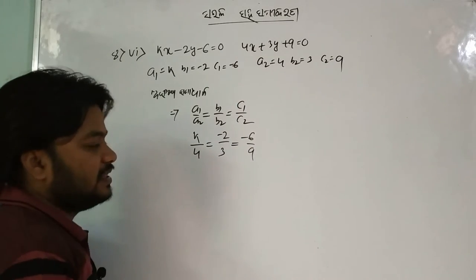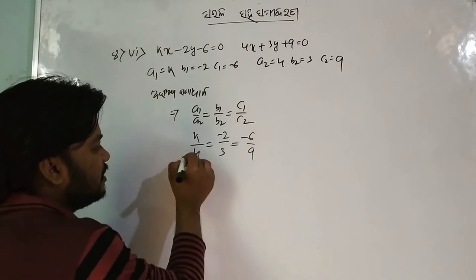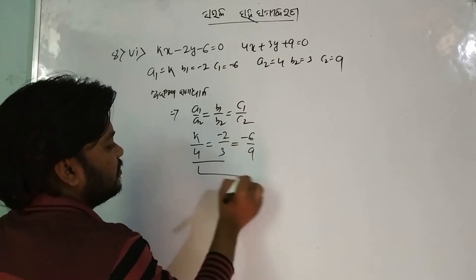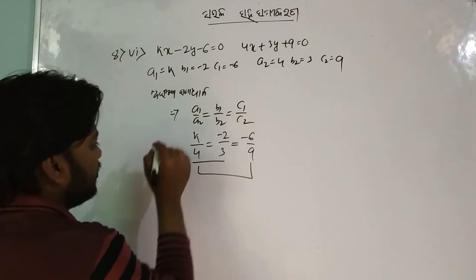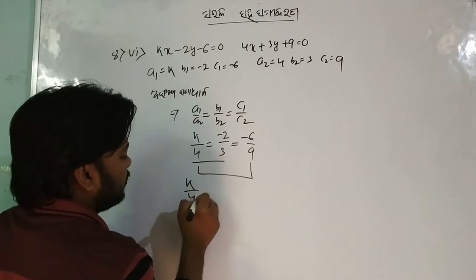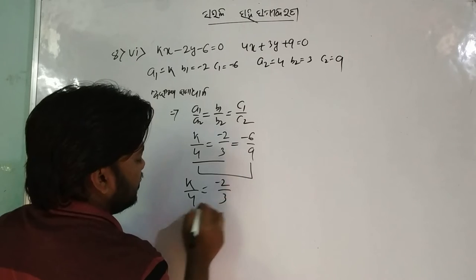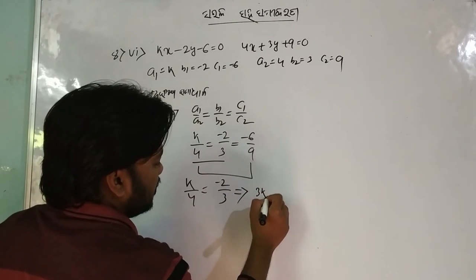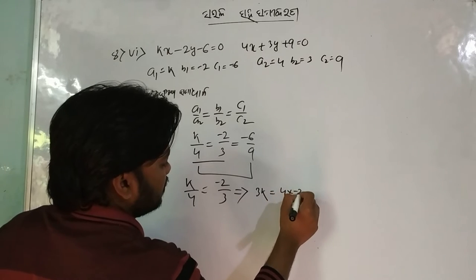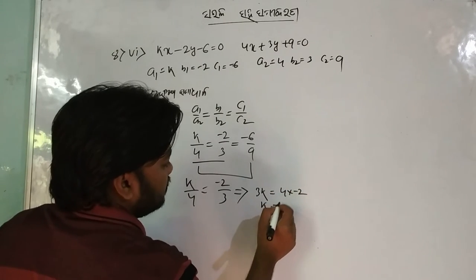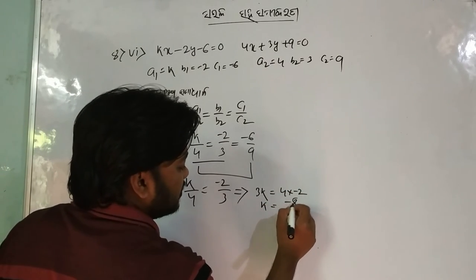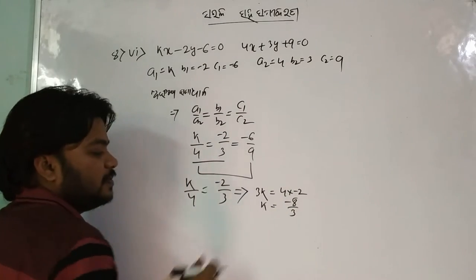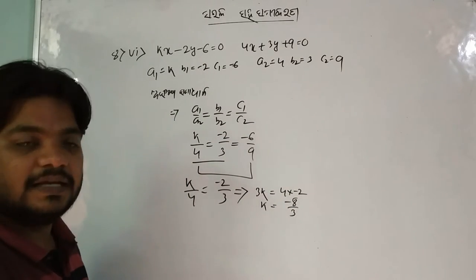So I will have 3K is equal to minus 2. 3K is equal to minus 3. That's why your course is minus 1 minus 2 minus 3.